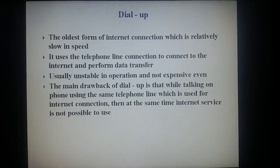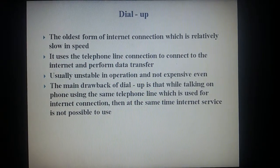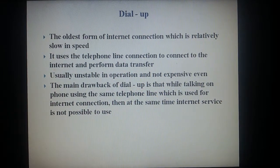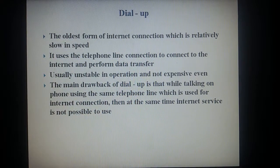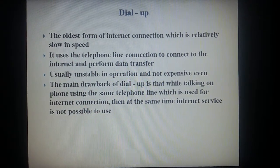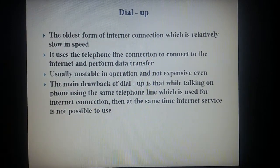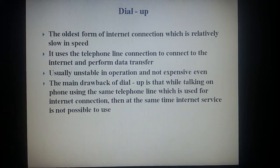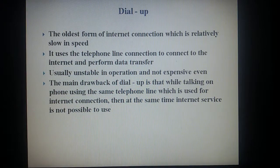Dial-up: the oldest form of internet connection which is relatively slow in speed. It uses the telephone line connection to connect to the internet and perform data transfer. Usually unstable in operation and not expensive. The main drawback of dial-up is that while talking on the phone using the same telephone line used for internet connection, internet service cannot be used simultaneously.